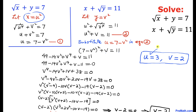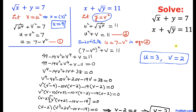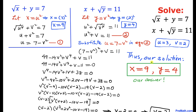Since x equals u squared and u equals 3, we get x equals 3 squared, so x equals 9. Since y equals v squared and v equals 2, we get y equals 2 squared, so y equals 4. Our final solution is x equals 9 and y equals 4. Thanks for watching, and please don't forget to subscribe to my channel for more exciting videos.